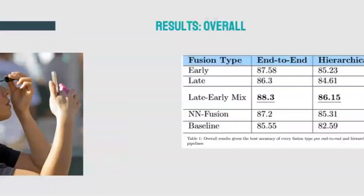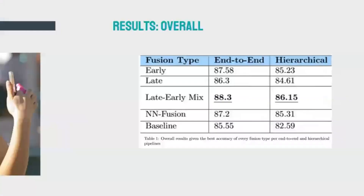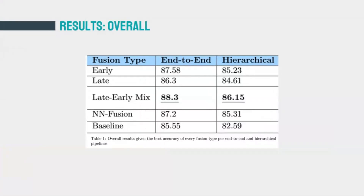Our overall results show that the late-early mix of features beats all other semantic fusion types in both the end-to-end and hierarchical pipelines, with accuracies of 88.3% and 86.15% respectively. It also beats our VGG16 baseline by 2.75%. Early fusion consistently beats late fusion across both pipelines — although late features are more explainable, they incur a slight accuracy trade-off of 1.28%.